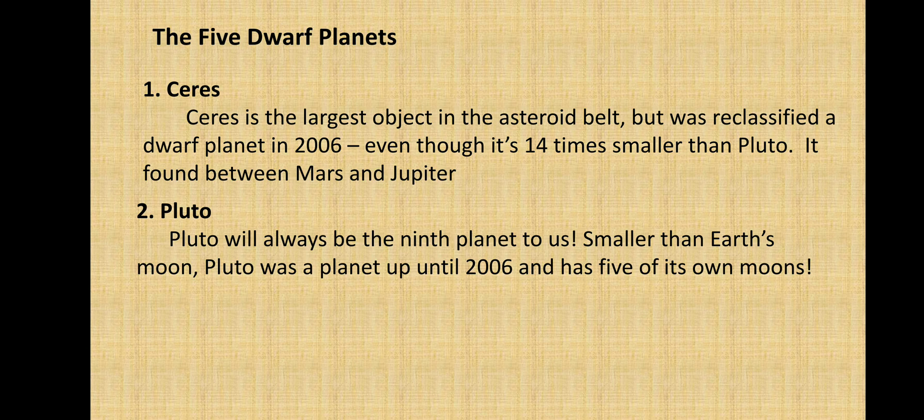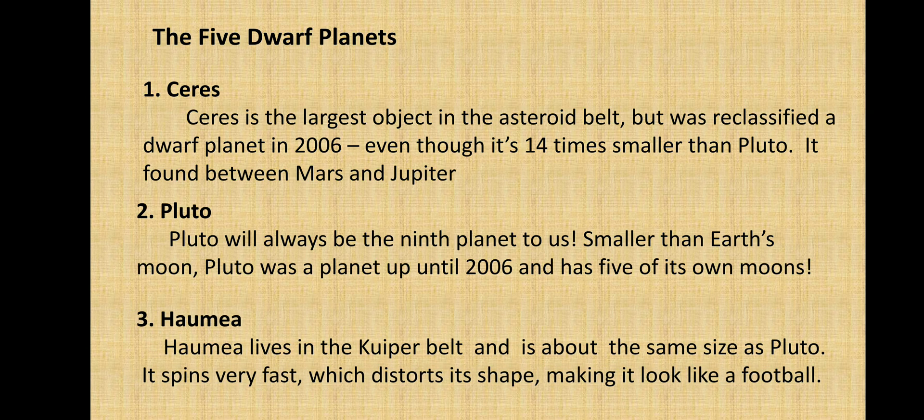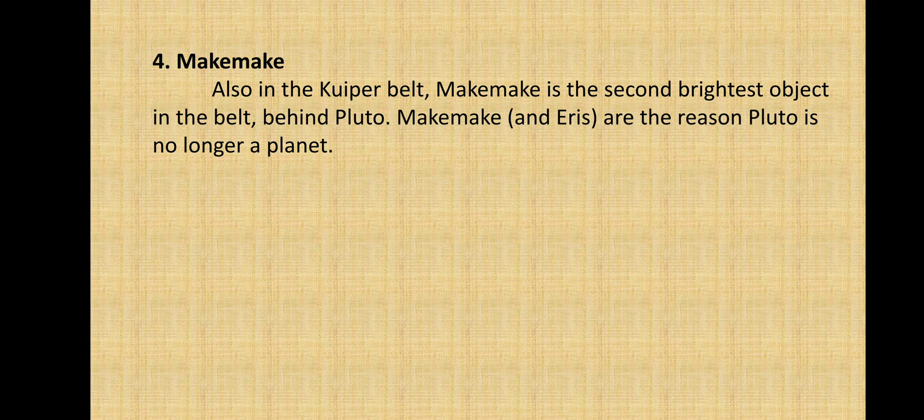Then you have Haumea. It lives in the Kuiper Belt and is about the same size as Pluto. It spins very fast, which distorts its shape making it look like a football. Next, Makemake is also in the Kuiper Belt. Makemake is the second brightest object in the belt, behind Pluto.